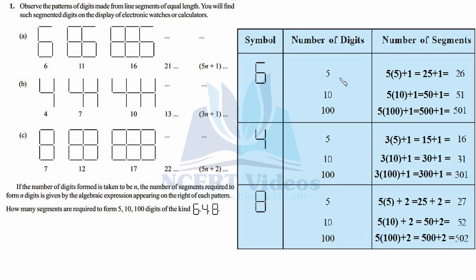For digit 6 repeated 5 times, put n = 5 in the expression 5n + 1: 5×5 + 1 = 26. Therefore 26 segments are required to construct digit 6 five times. For 10 digits: 5×10 + 1 = 51 segments. For 100 digits: 5×100 + 1 = 501 segments. So without drawing, we calculated the number of segments required.